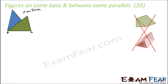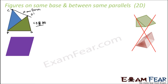Now the question is whether they are on the same parallels. For that, the vertex opposite to the base — in the case of a triangle there is only one such vertex — should form a line, and that line CD must be parallel to the common base. Here CD is not parallel to the common base, so these triangles are on the same base but not between the same parallels.